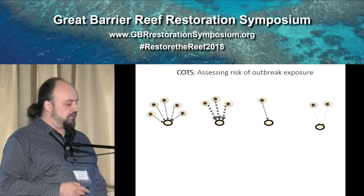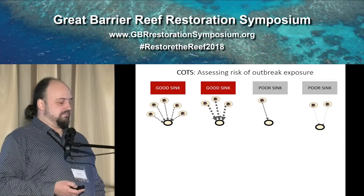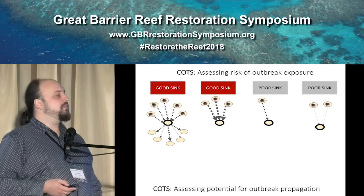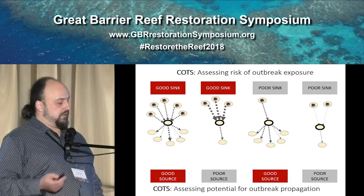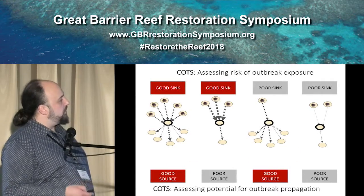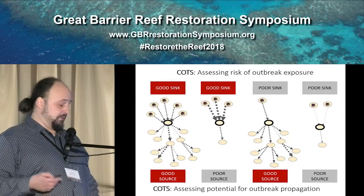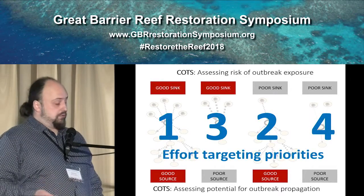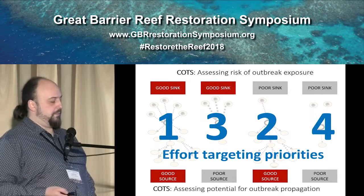The reefs on the left are going to be good sinks and will have high exposure to larvae, whereas others would be poor sinks. We can also assess potential for outbreak propagation — spreading the larvae in the system — with reefs being either good or poor sources. We can combine these categories, and look not just at local sources but also at regional sources — so reefs that are going to make the regional situation worse overall. We can then use this for prioritization of control efforts: reefs that have high risk of getting COTS and then being a good source later should be high priority.